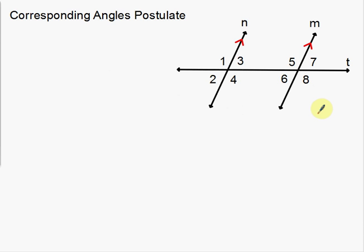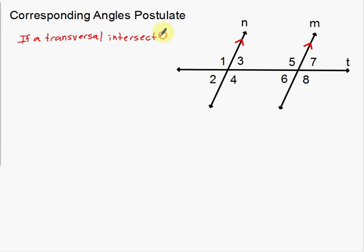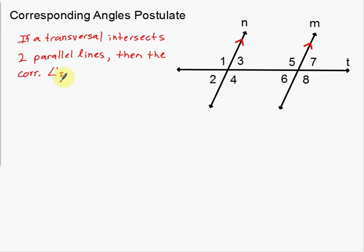The corresponding angles postulate says: if a transversal intersects two parallel lines — we have a transversal and two parallel lines — then the corresponding angles are congruent, using the congruency symbol.